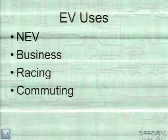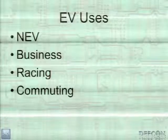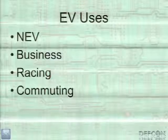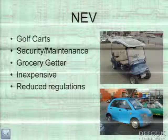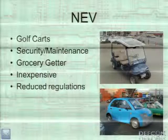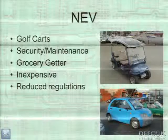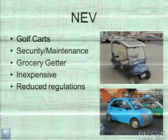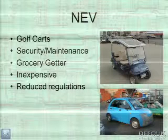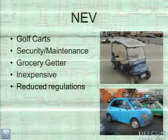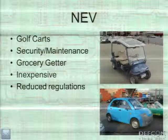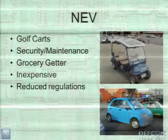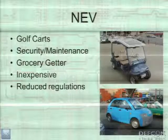EV uses include neighborhood electric vehicles, business use, racing, and commuting. Everyone's familiar with golf carts; EVs are also popular for security and maintenance vehicles because they're quieter with no emissions. People use them for grocery runs and errands. For a low-speed car, it's very cheap to build, with cheaper maintenance, sometimes no registration, and no safety or emissions inspections required depending on the state.